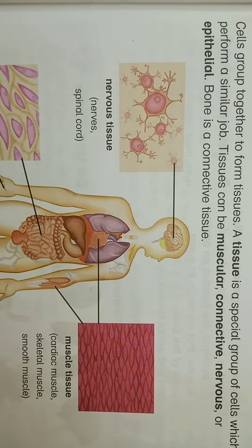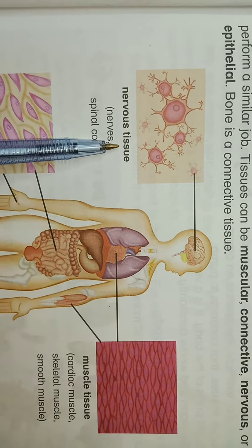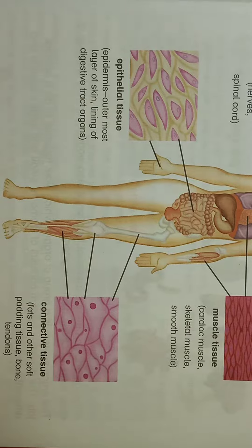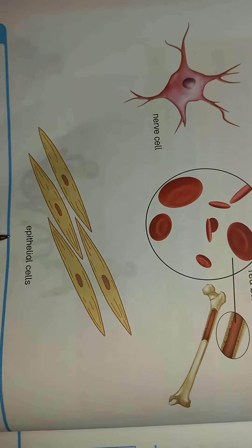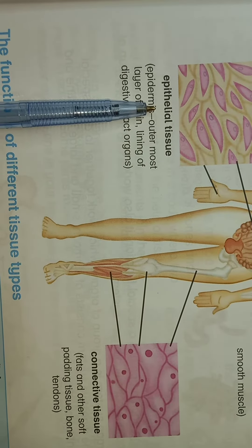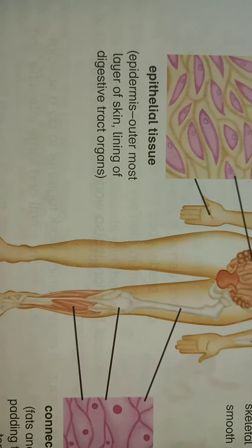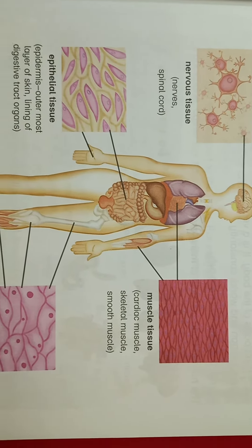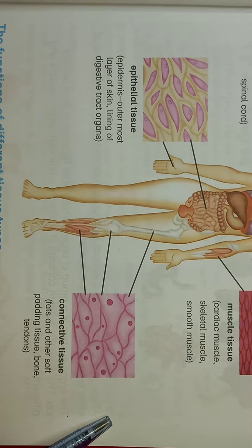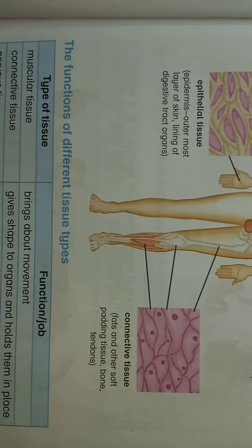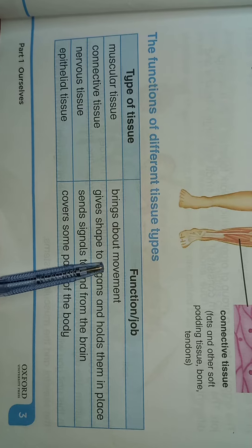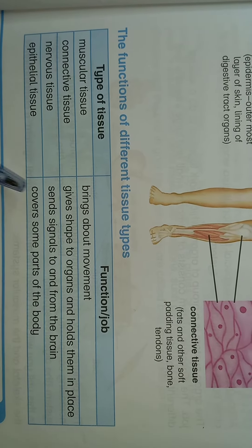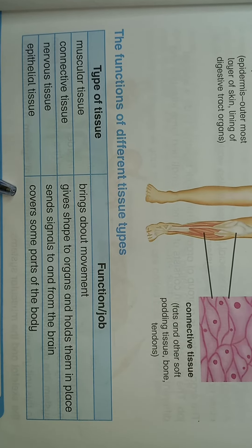Nervous tissue is connected with the nerve cells. Epithelial tissue is made up of epithelial cells. Nervous tissue sends signals to and from the brain, and epithelial tissue covers some parts of the body.